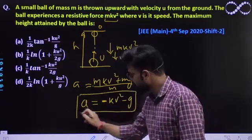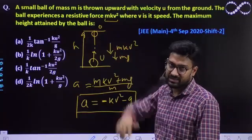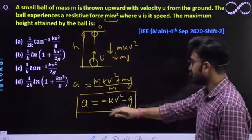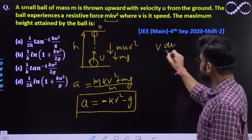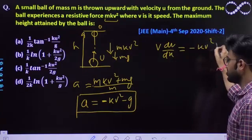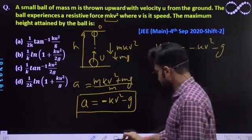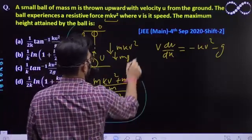Once the acceleration expression comes, you can directly put it in the formula and find the height in terms of h. Acceleration can be written as v dv by dx. So it would be equal to minus kv² minus g. We will erase this and solve further here.